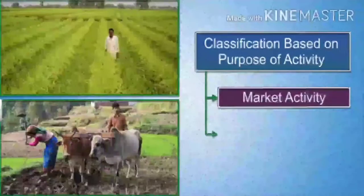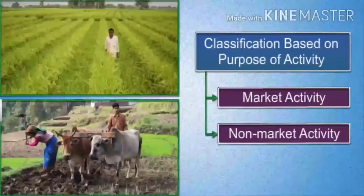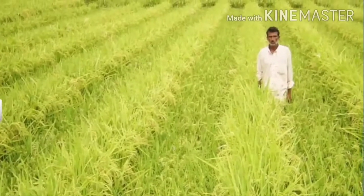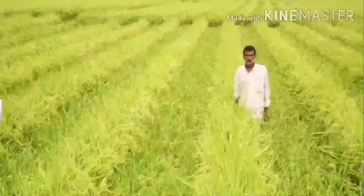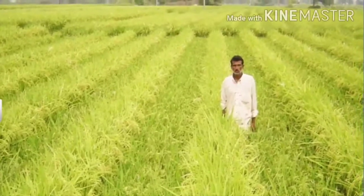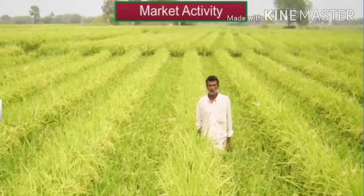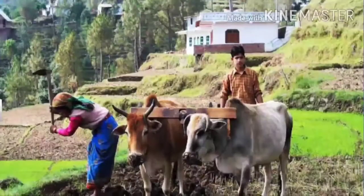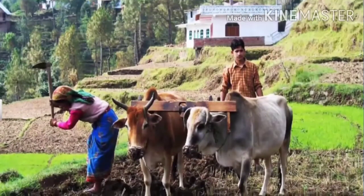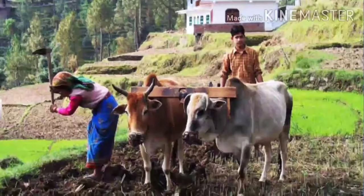Note that agriculture is an example of both market and non-market activity. Agriculture on a large scale, where a farmer produces enough for himself and is left with a surplus to sell and make a profit, is a market activity. However, agriculture on a small scale just to feed the farmer and his family is a non-market activity.